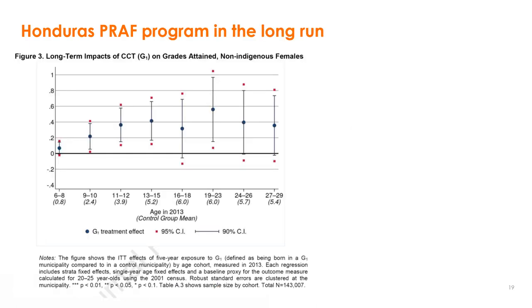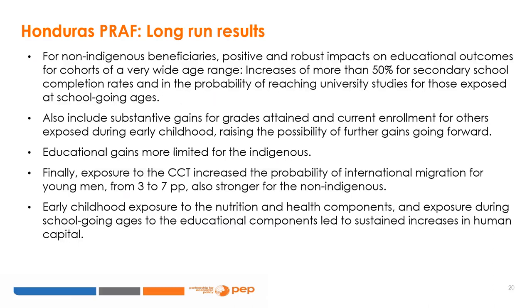This figure shows the long-term impacts of the program on grades attained by non-indigenous females. The effect is positive by about 0.2 to 0.6 for females in the age range 6 to 19 in 2013. Overall, the program finds that for non-indigenous beneficiaries there are positive and robust impacts on educational outcomes for a wide age range, with increases of more than 50% for secondary completion rates and also positive effects in the probability of reaching university studies for those exposed at school-going ages.